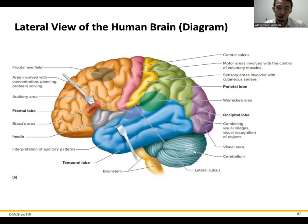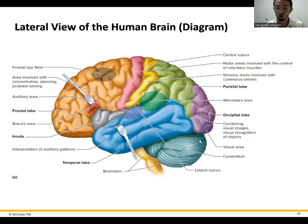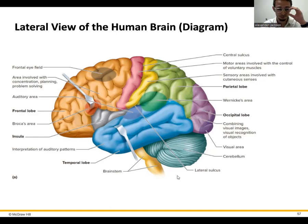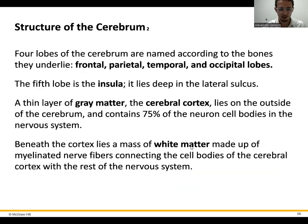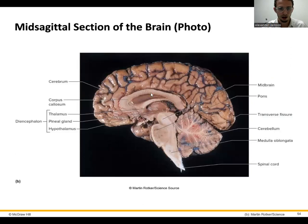The cerebellum primarily deals with proprioception — where your body is in space — as well as balance and coordination. This is a really important part: if you're tilted forward, you don't fall over because of your cerebellum. Then you've got the brainstem and the diencephalon above it.